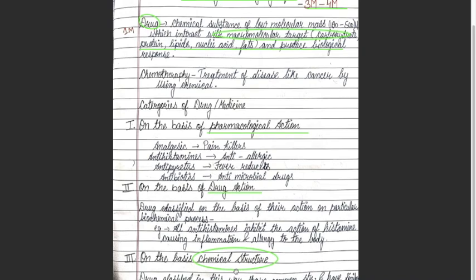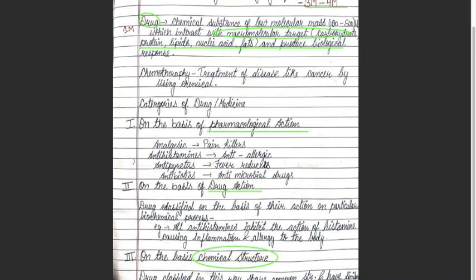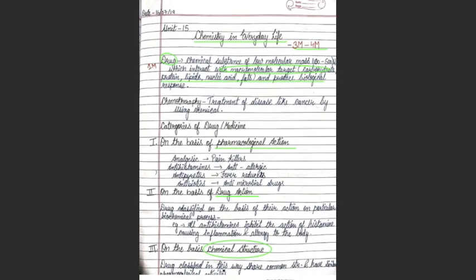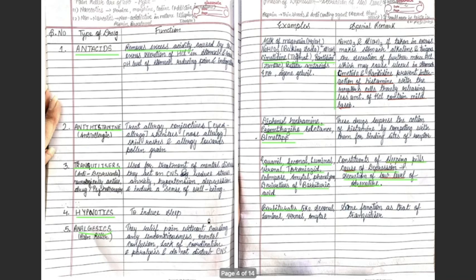The third classification of drugs is on the basis of chemical structure. Drugs which share a common structure and have similar pharmacological activity are grouped into one category. So we have three classifications: pharmacological action, drug action on biochemical processes, and chemical structure.